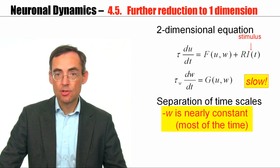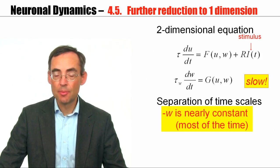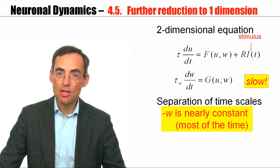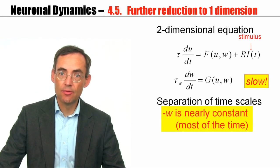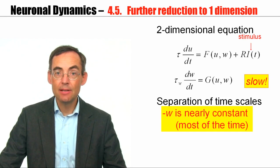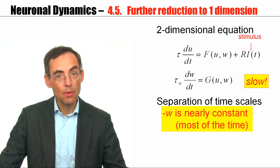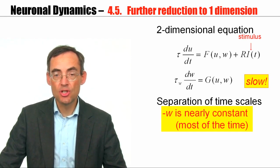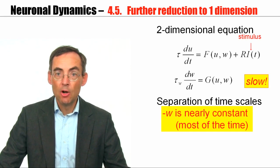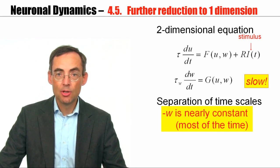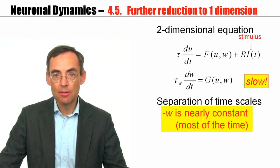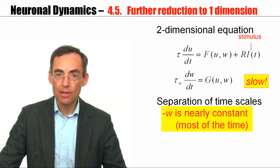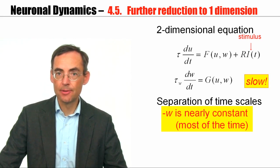In order to make this transition, I will do yet another separation of time scales. I will assume that the auxiliary variable W is slow, and that means that most of the time W is indeed constant, and we can exploit that. Before I go into the mathematical details, let me remind you of the motivation — why do we do all this?